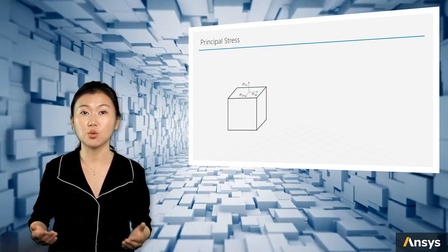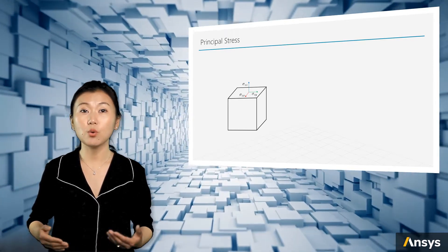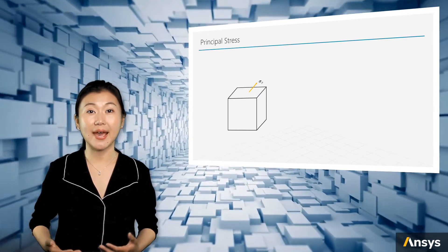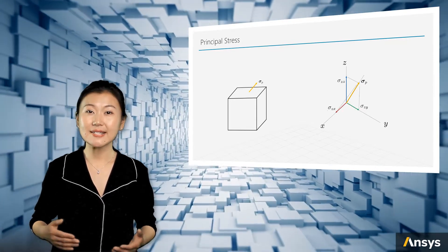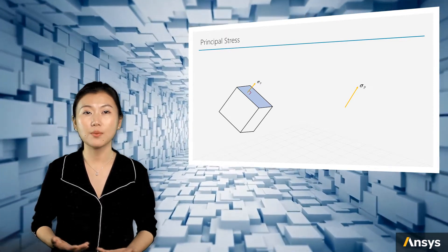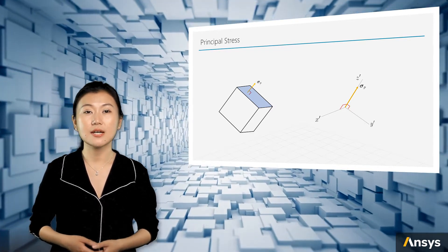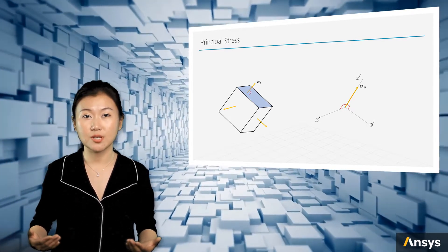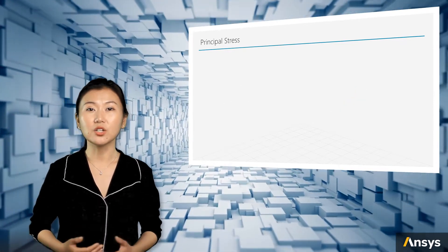The three stress components are represented by three vectors with directions and lengths. Now, if we do vector addition on these three vectors, we will create a new vector — let's call it sigma p. In reverse, if we decompose sigma p in the x, y, and z directions, it gives back the original three stress components. Next, let's rotate the cube surface to a position where the face is normal to sigma p, and identify a new coordinate system: x prime, y prime, and z prime. In this new coordinate system, sigma p is the only stress component and is normal to the surface. Such sigma p is the principal stress of the original stress state. Similarly, we can find principal stresses on the other two faces, and we use indices 1, 2, and 3 to denote the three principal stresses.